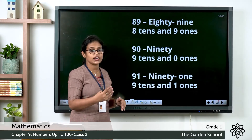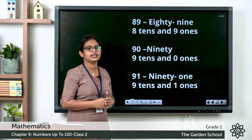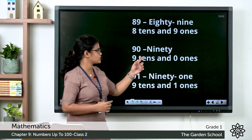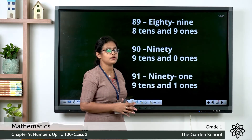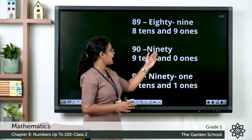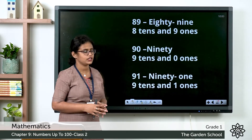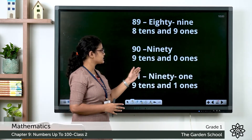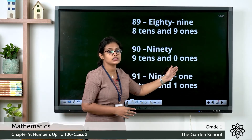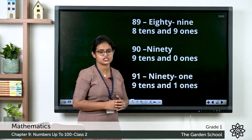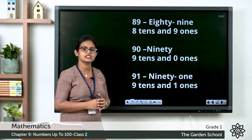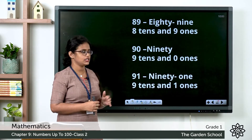What about after 89? It is 90. So see the number name: N-I-N-E-T-Y. So 9 tens and 0 ones, that makes 90.